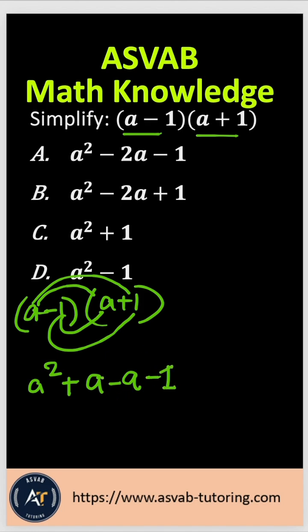Now combine the like terms. You have positive a and negative a cancelled out, so that gives you a² - 1. With that, the correct answer is option D. Make sure that you practice over and over again.